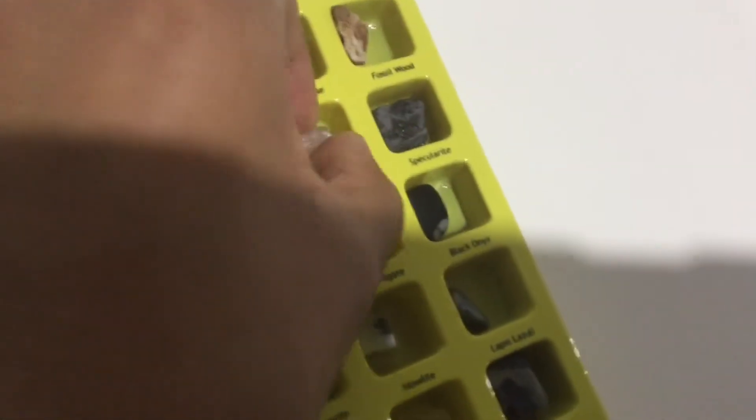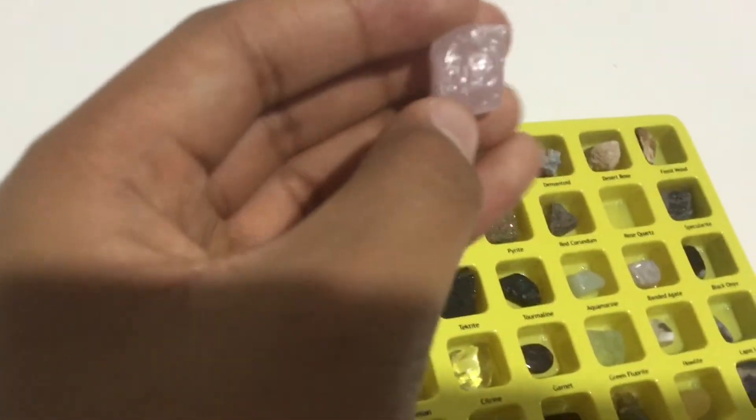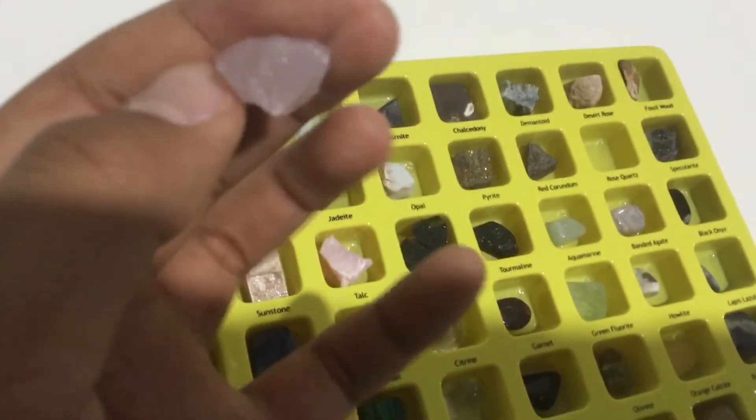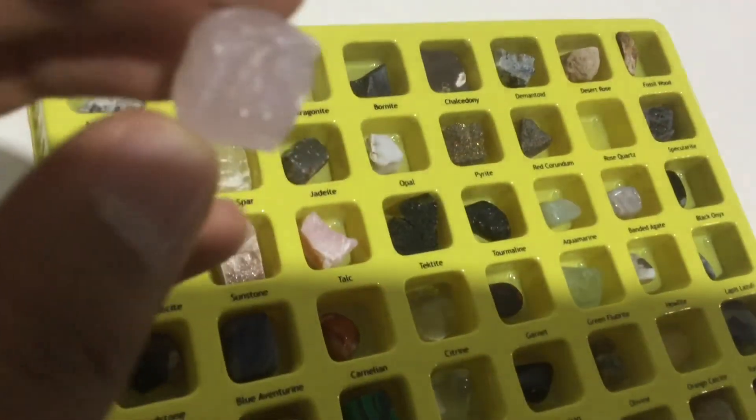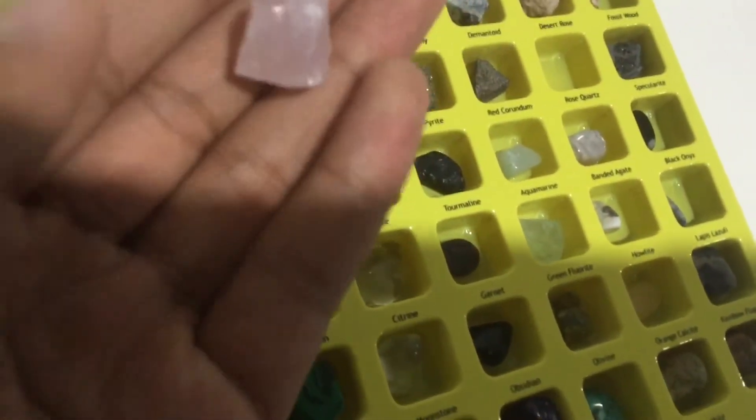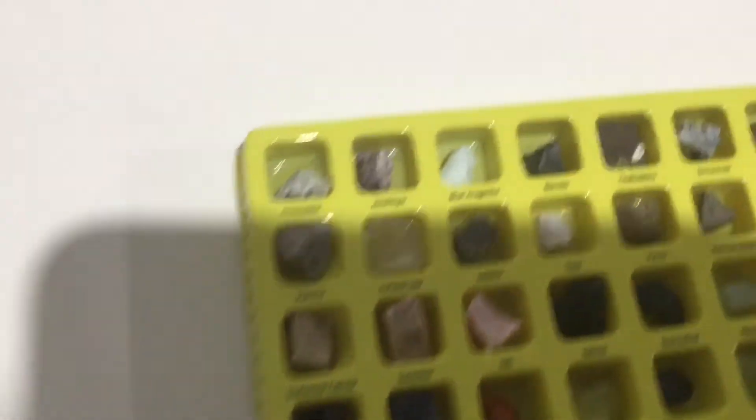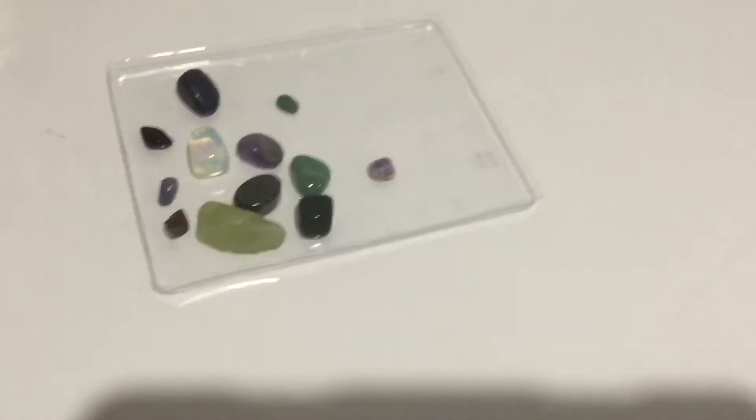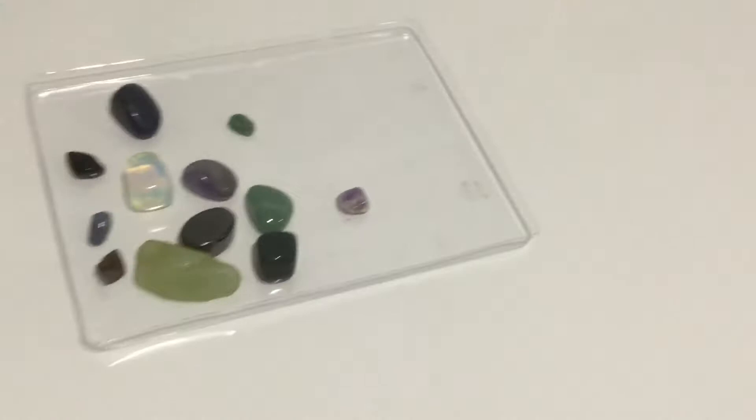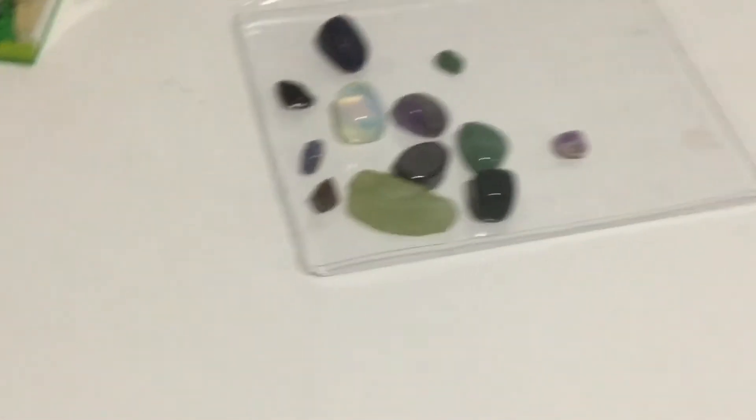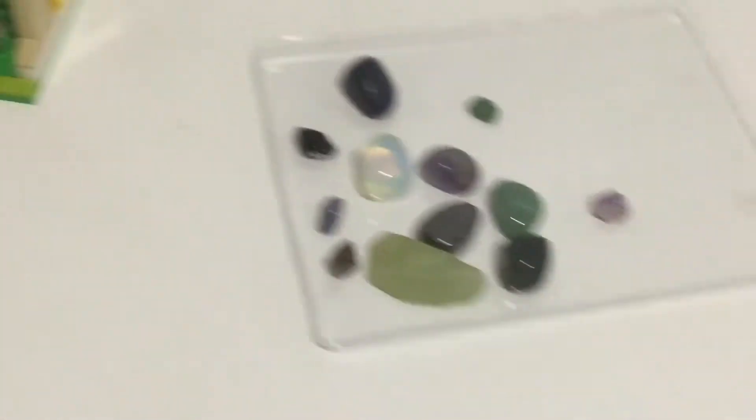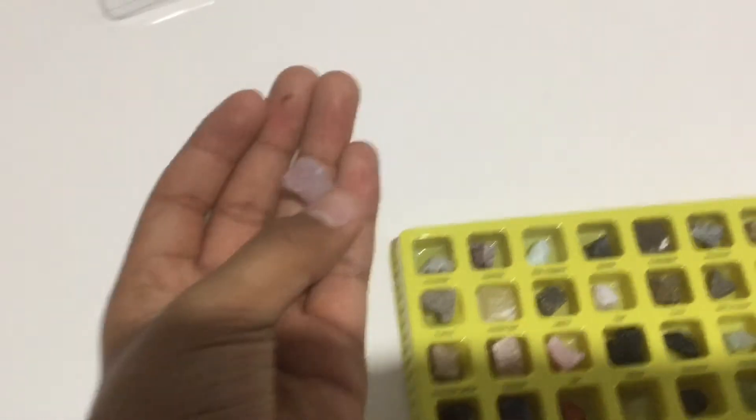This one is rose quartz. It's a very cool gem. It's like pinkish. It's a type of quartz. Amethyst, if you didn't know, is another type of quartz. The blue quartz and black quartz have both types of quartz too, but they don't have a cool name like amethyst and rose quartz.